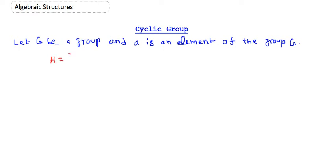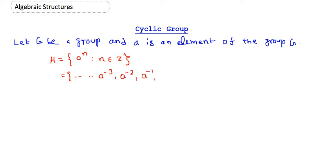We consider a subset H which is the collection of all integral powers of the element A, where n is any integer. So H = {..., a^{-3}, a^{-2}, a^{-1}, a^0, a, a^2, a^3, ...} and so on.